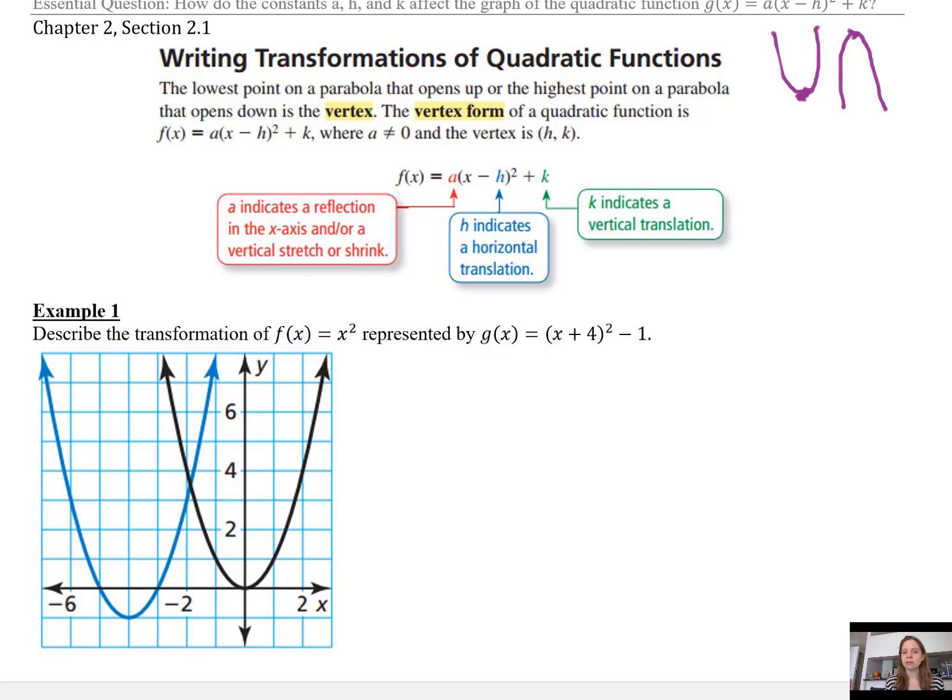The vertex form of a quadratic function is f(x) = a(x - h)² + k, where a is not zero and the vertex is (h, k). This should be reviewed from our transformations lessons in Unit 1, that we have three parameters in our vertex form: the a, h, and k.